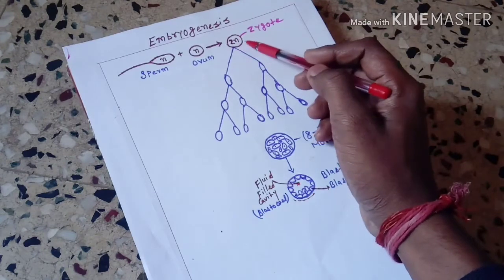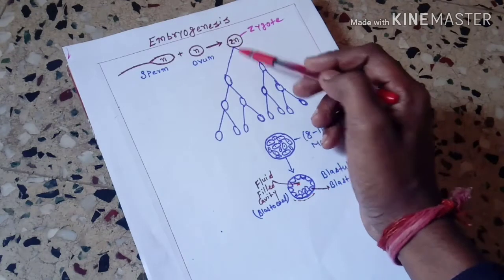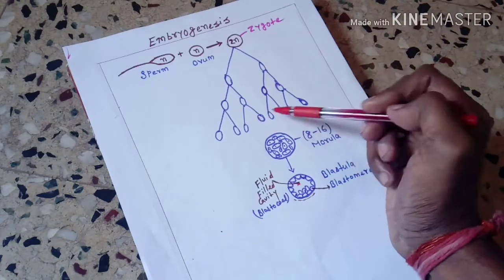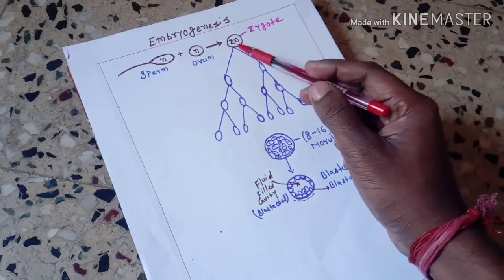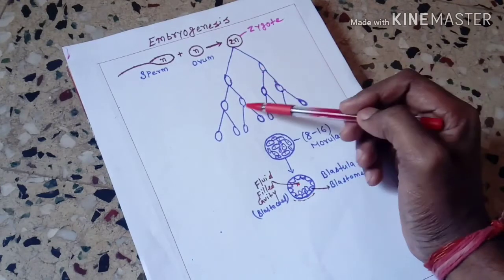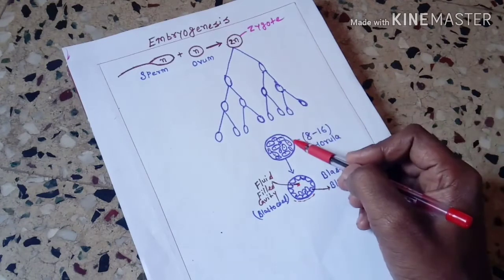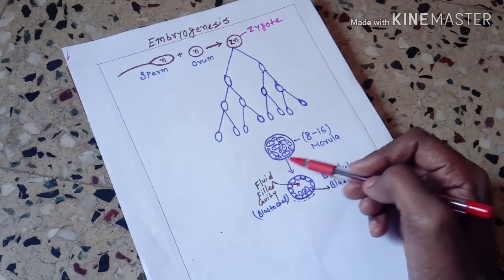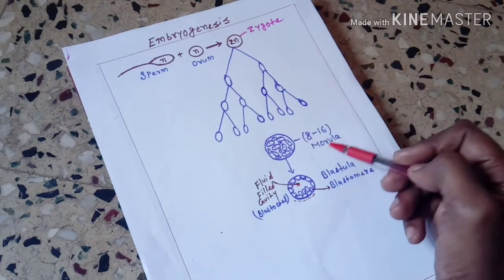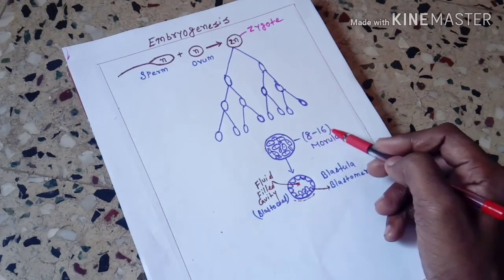Now this zygote starts dividing — it undergoes division. From one it becomes two, two becomes four, four becomes eight. Look at this: one zygote → two → four → eight. Now the stage from eight to sixteen cells — this stage is called morula.